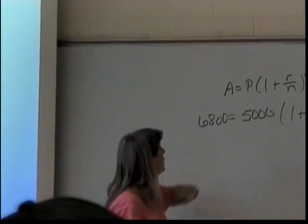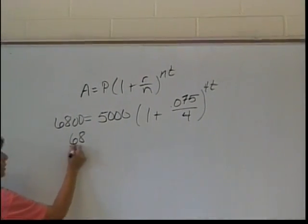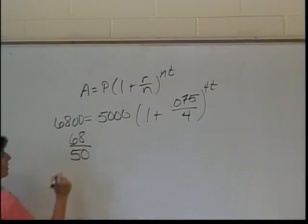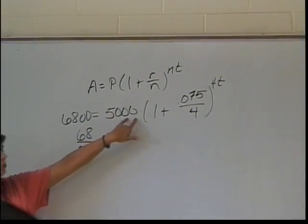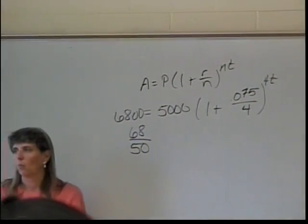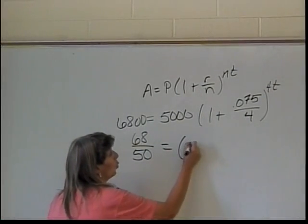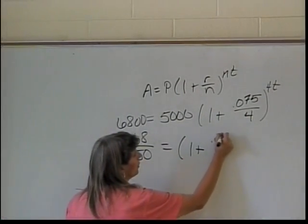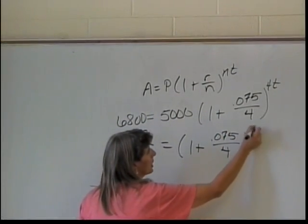What's the first step to solving this? Divide both sides by 5,000. Because I don't want to write all those zeros, I'll make it 68 over 50. These two zeros and those two zeros become one. So then I have 1 plus 0.075 divided by 4 to the 4 times T.